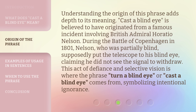Understanding the origin of this phrase adds depth to its meaning. 'Cast a blind eye' is believed to have originated from a famous incident involving British Admiral Horatio Nelson. During the Battle of Copenhagen in 1801, Nelson, who was partially blind, supposedly put the telescope to his blind eye, claiming he did not see the signal to withdraw. This act of defiance and selective vision is where the phrase 'turn a blind eye,' or 'cast a blind eye,' comes from, symbolizing intentional ignorance.